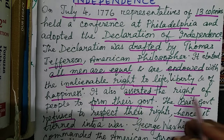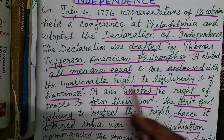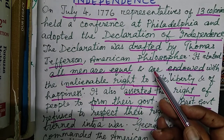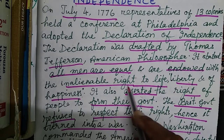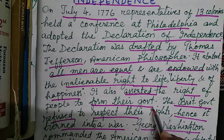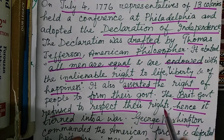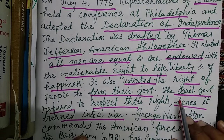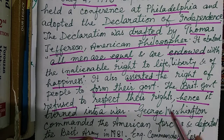The Declaration of Independence also accepted the right of people to form their own government. Two key points: number one, all men are equal and endowed with the inalienable right to life, liberty, and happiness; and number two, the right to form their own government. They were not having the power or chance to form their own government — it was run by the British from another country. The British government refused to respect these rights and refused the demands written in the Declaration.